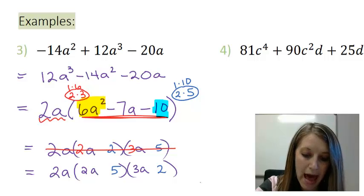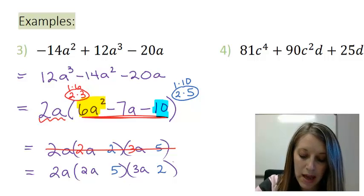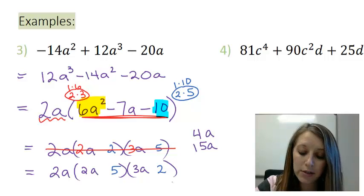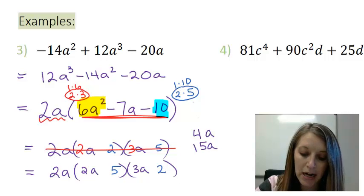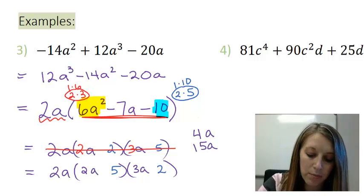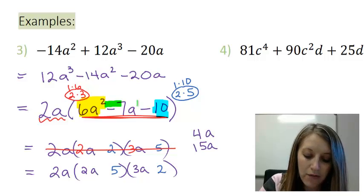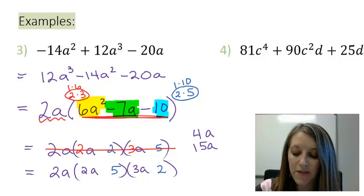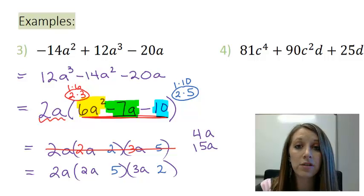Now, if I multiply my outside, that gives me a 4a, and my inside gives me a 15a. And I want to try and add and subtract these to get my middle term here of negative 7a. If I add them, it gives me 19. If I subtract them, it gives me 11. So this tells me that I have the incorrect answer, which means I have to try again.